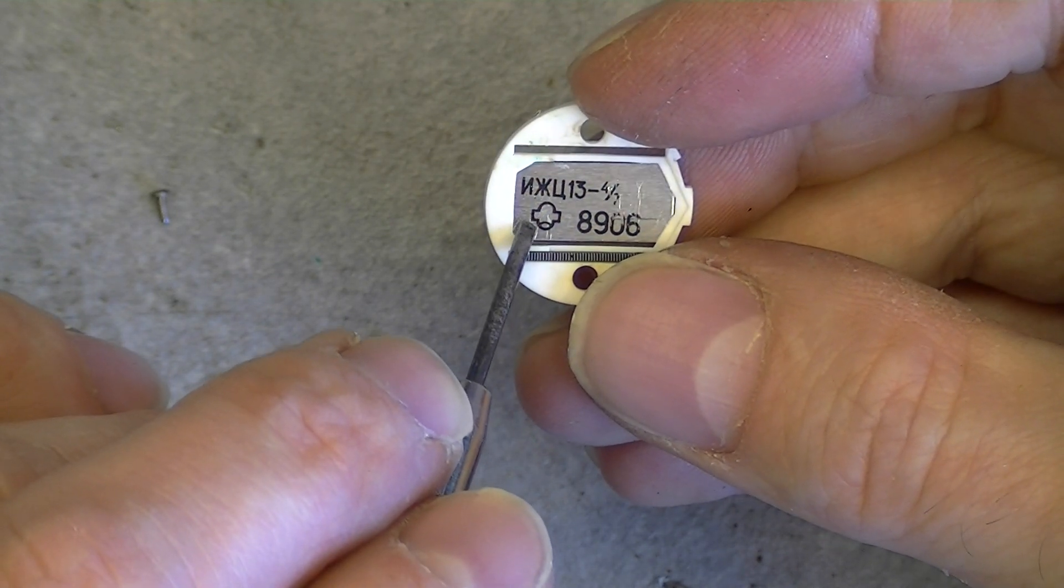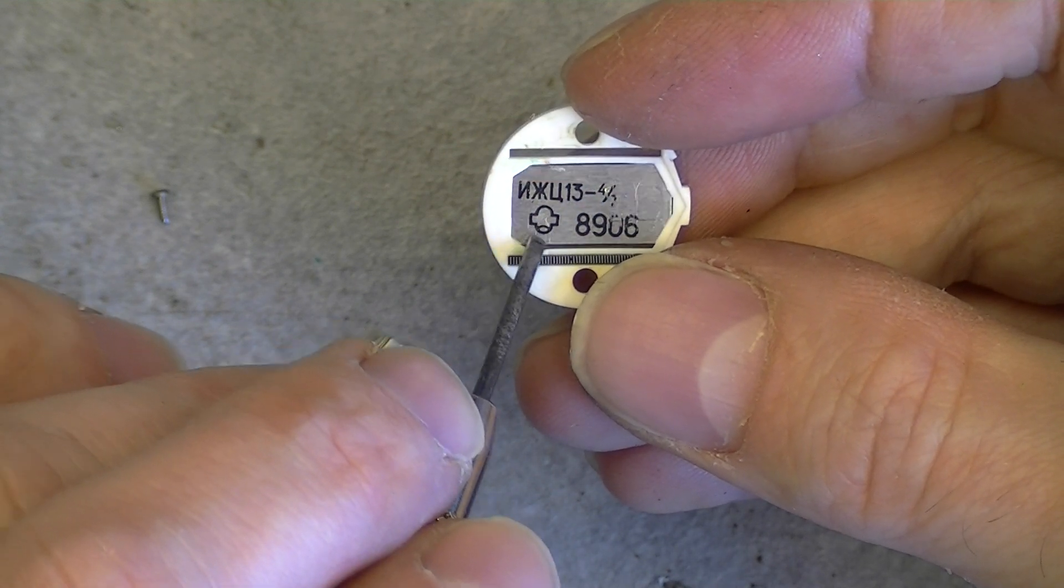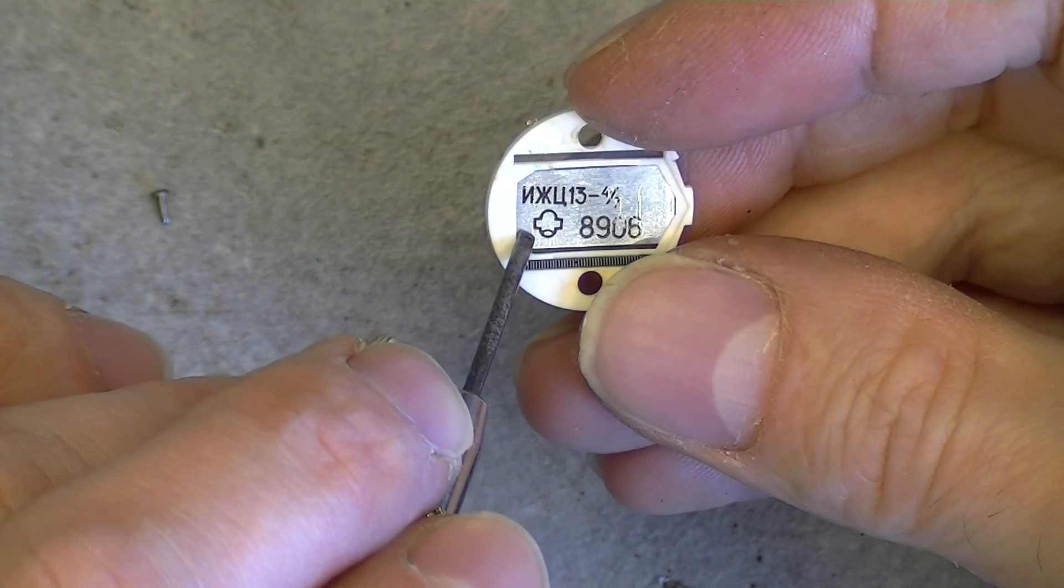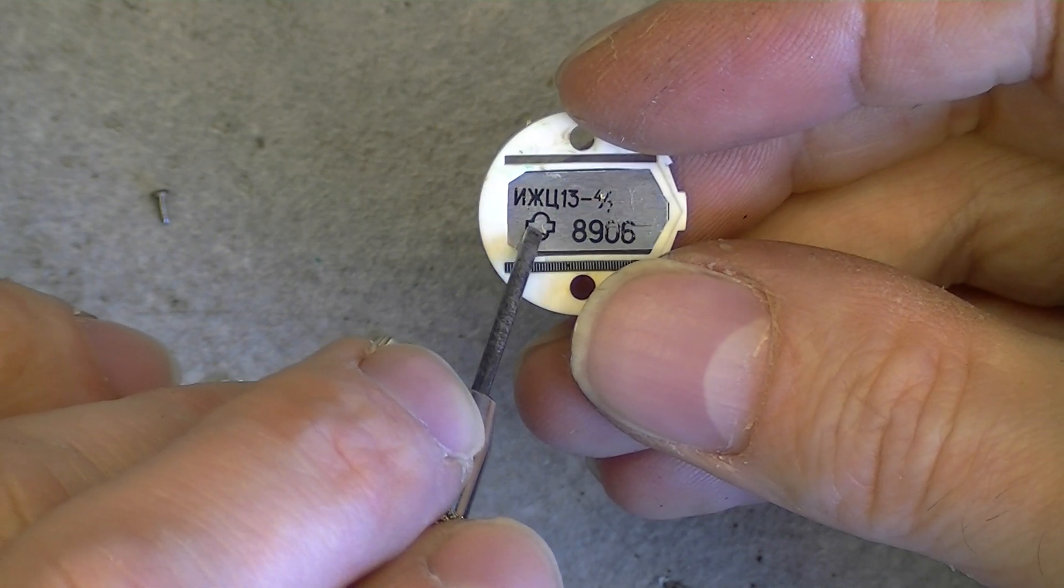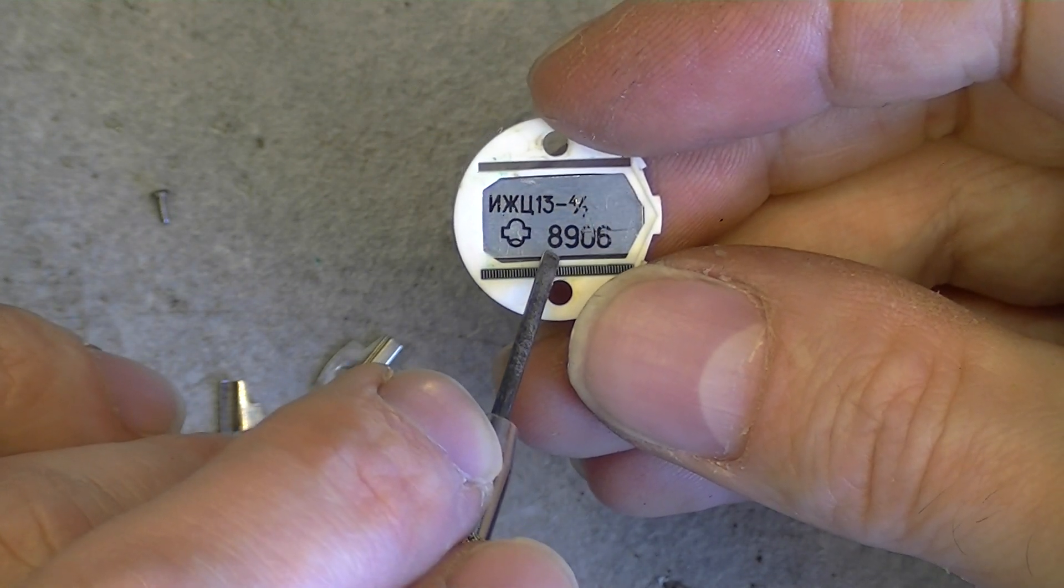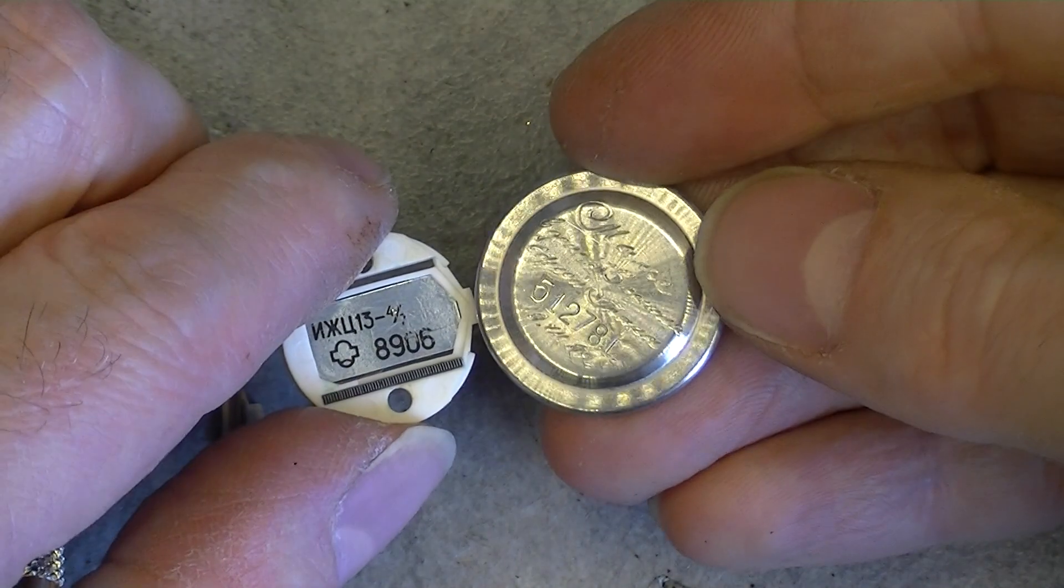It almost looks like the core of a nuclear reactor, in fact. But no, it is a tube with a heater at the bottom. And a date code of 89, so it is matching the date code we have here.